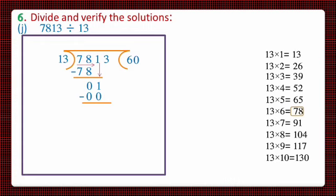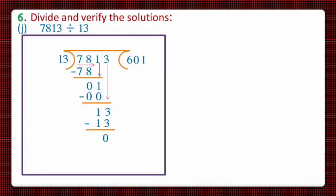Next again we'll lower down 3 from the top and it makes the number 13. Now again we'll check the table of 13 to find the value less than or equal to 13, and that's 13. As it comes on 1, we'll write 1 on the right hand side of the house and 13 we will write under 13. On subtraction we will get 0 as the remainder. So 0 is our remainder.